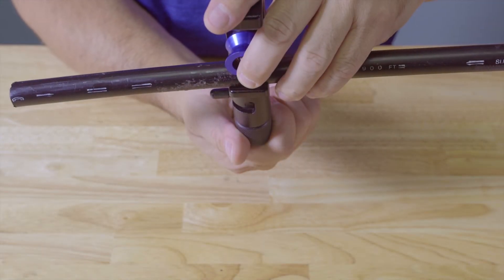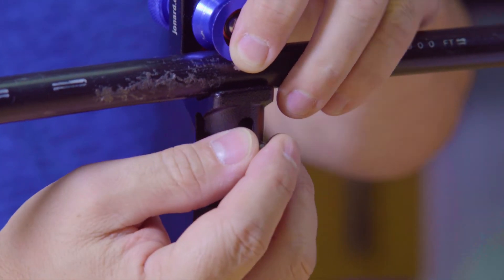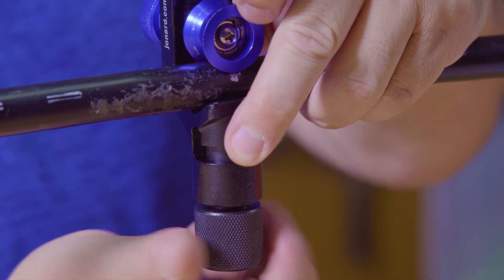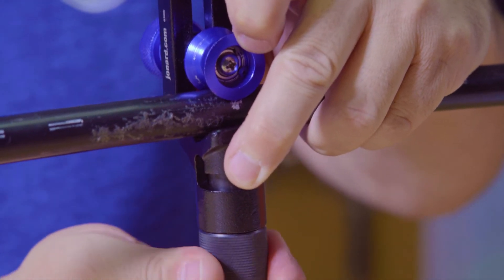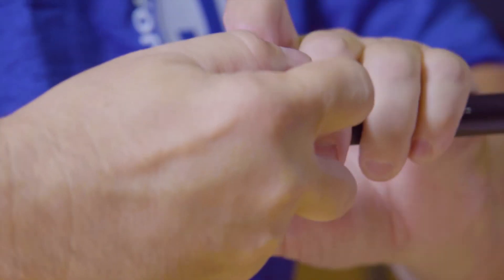To perform a ring or radial cut, retract the blade by loosening the black knurled knob. Move the lever so that the blade is now perpendicular to the V groove in the tool. Tighten the black knurled knob and rotate the tool around the cable. Remove the tool from cable.